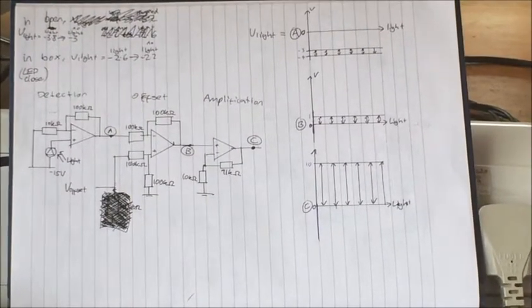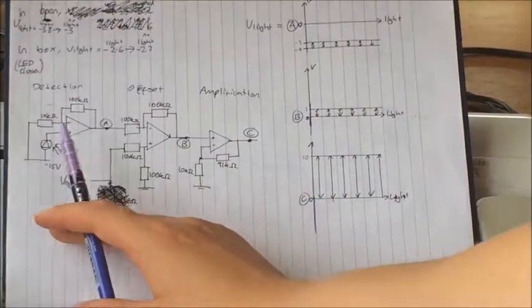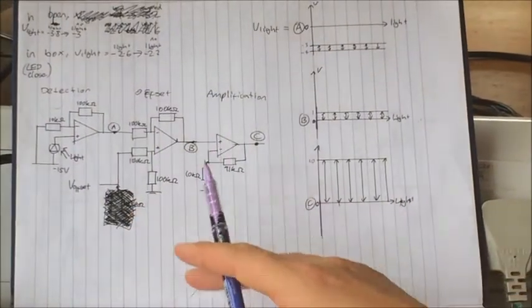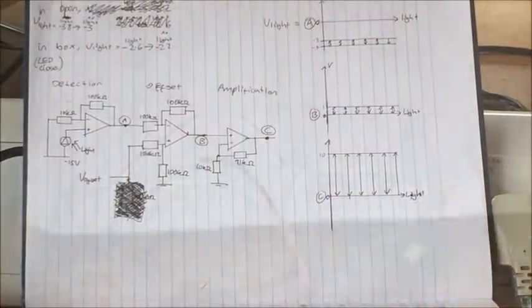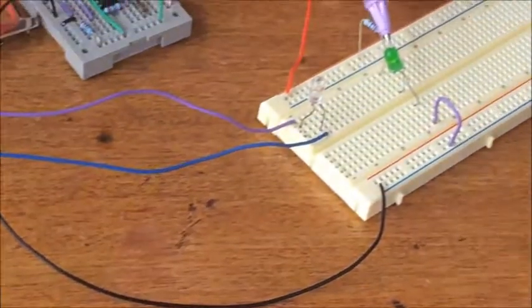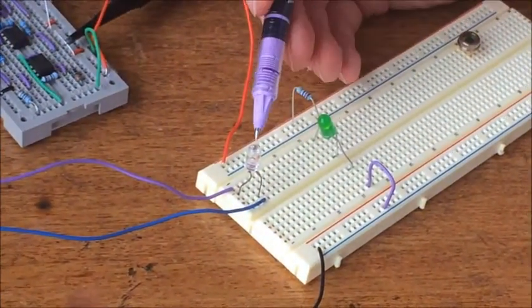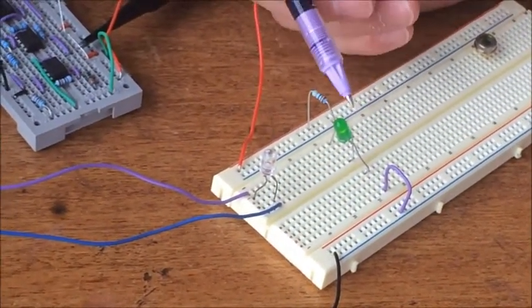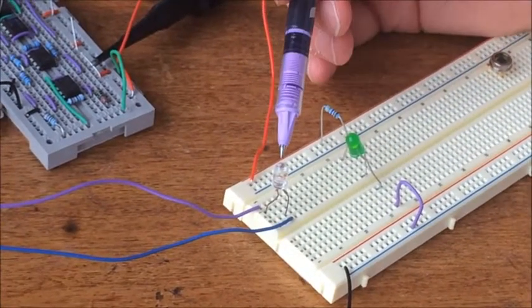This is my light detecting circuit, split into three parts: detection, offset, and amplification. First, I'll talk about detection. Our light from GFP, represented here by a green LED, is incident on our photodiode. The light goes from here to there.